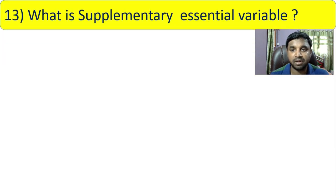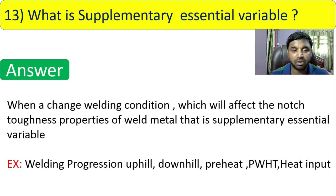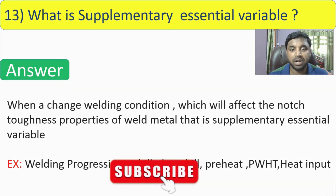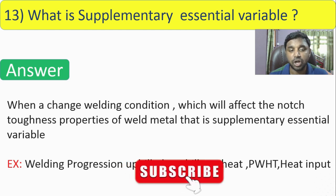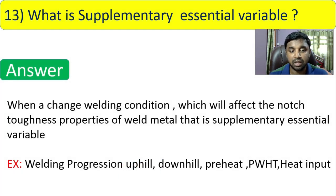Question 13: what is a supplementary essential variable? A supplementary essential variable is a change in welding condition that affects the notch toughness properties of the weld metal. If you change anything in welding conditions that affects notch toughness properties, you must revise your WPS. It is essentially one type of essential variable focused on toughness rather than general mechanical properties.